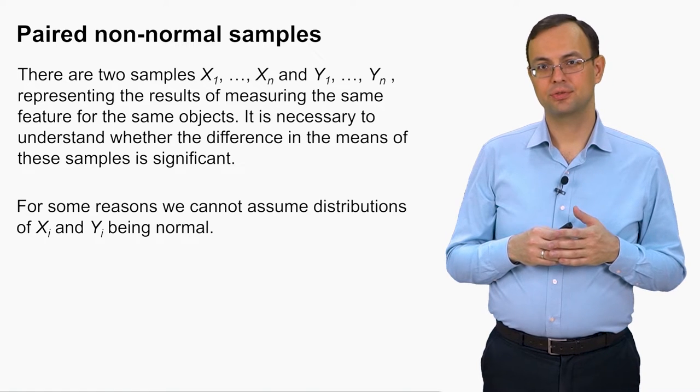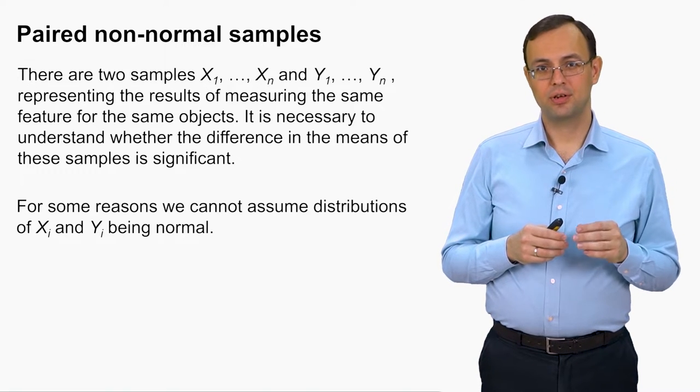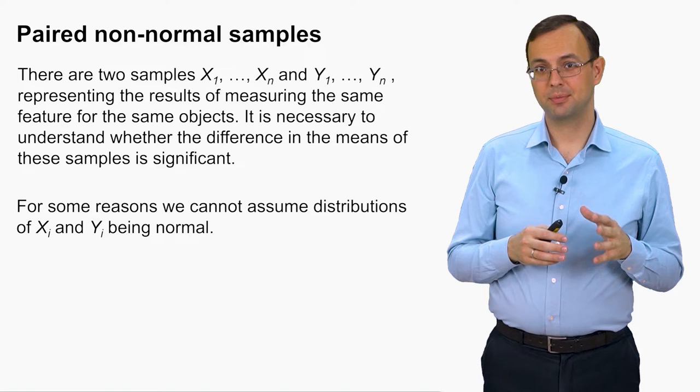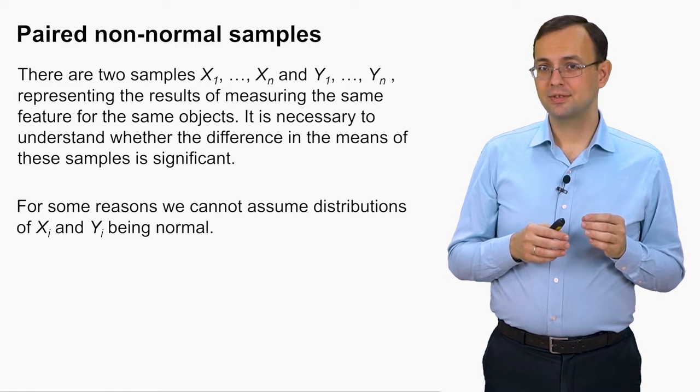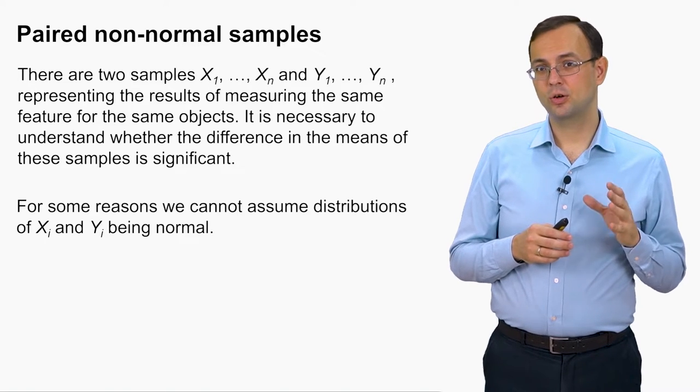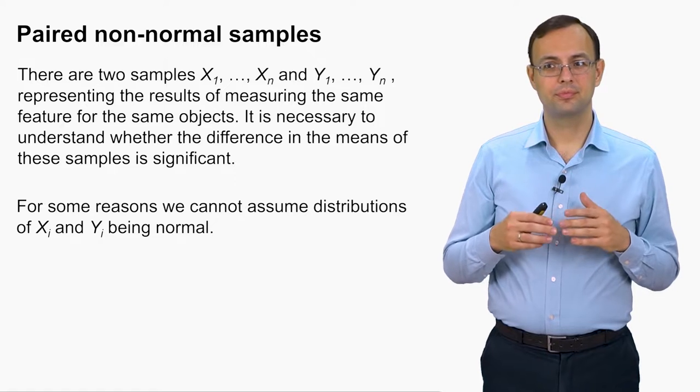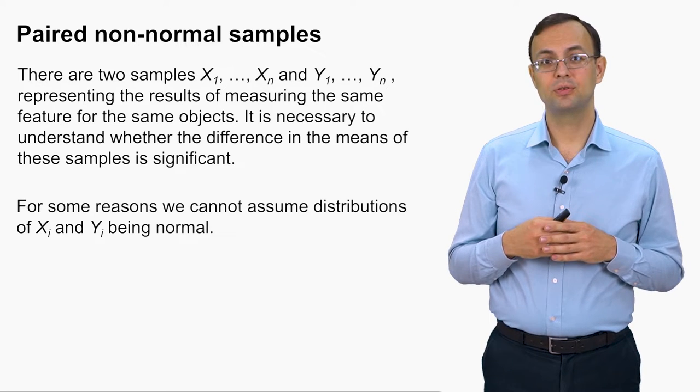Our second case for today is the situation when we still have two paired samples, but for some reasons we cannot assume their distribution to be normal.